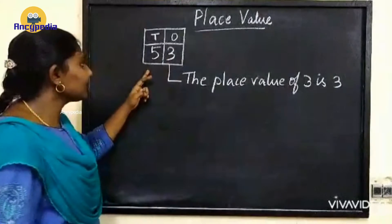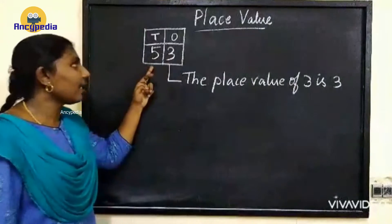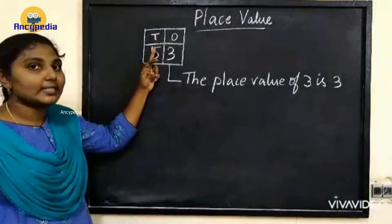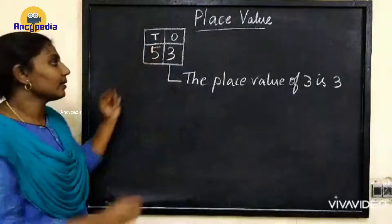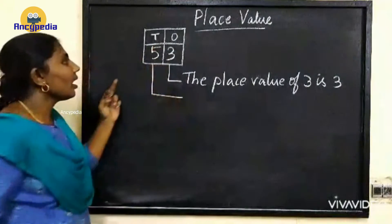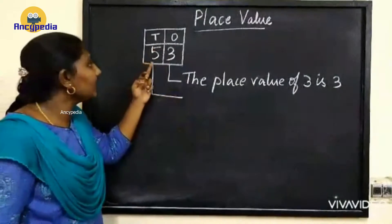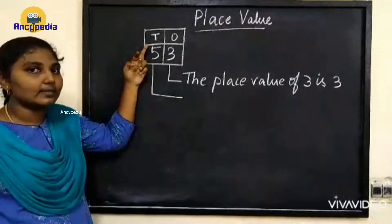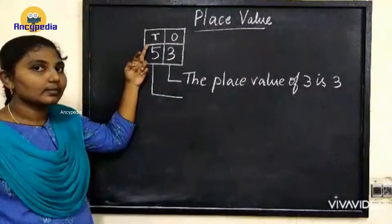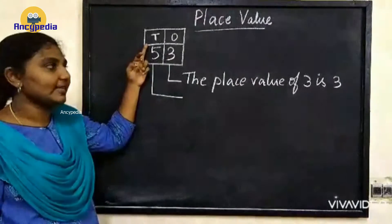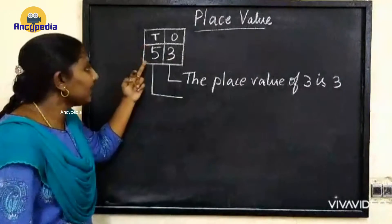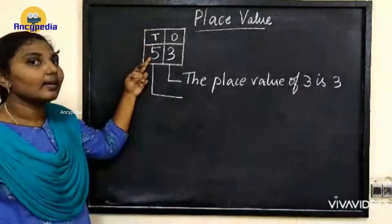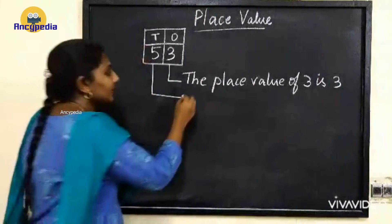Okay next we have 5 in 10's place. So how to write the number 5 in 10's place? 50. The place value of 5 is 50.